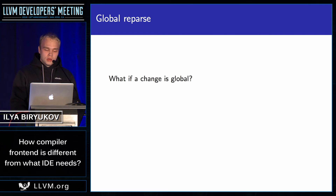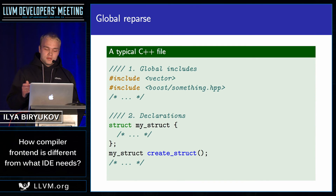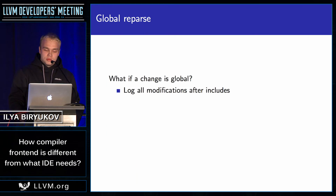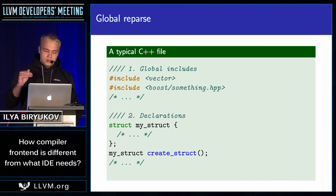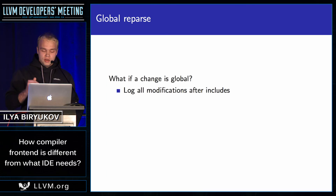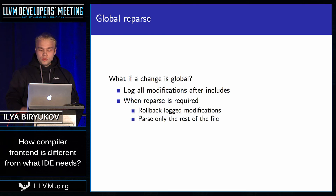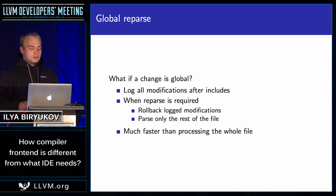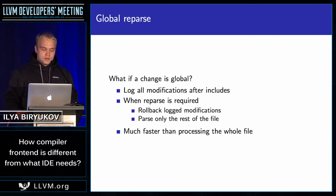We also did this optimization when a global change happens. When a global change happens in a typical C++ file, you can just reparse the whole file. But you should notice that most of the time in a typical situation is spent on processing the includes — the include preamble — rather than parsing the rest of the file. So what we do is after parsing the preamble, we log all the modifications done to our data structures after the includes. When a reparse is required, we just roll back those logged modifications and parse the rest of the file. This will be much faster because we do work proportional to the size of the current file rather than the size of the included files.